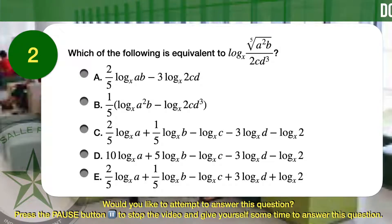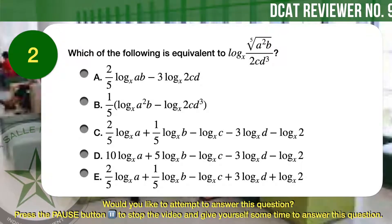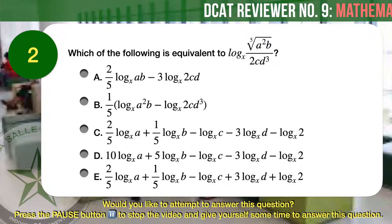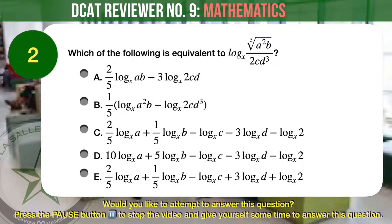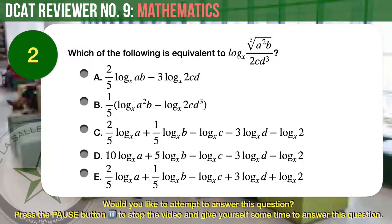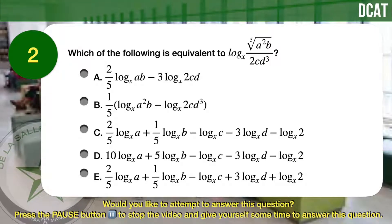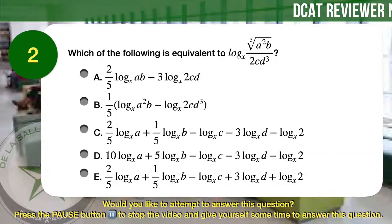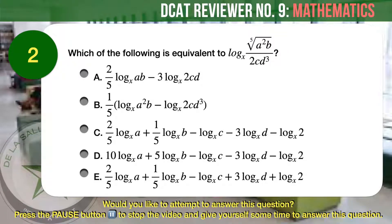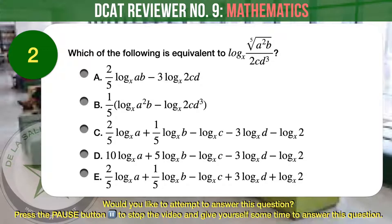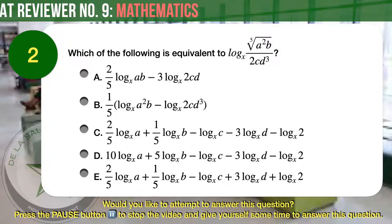Answer choice C: two-fifths times the logarithm base x of a, plus one-fifth times the logarithm base x of b, minus the logarithm base x of c, minus three times the logarithm base x of d, minus the logarithm base x of 2. Answer choice D: ten times the logarithm base x of a, plus 5 times the logarithm base x of b, minus the logarithm base x of c, minus 3 times the logarithm base x of d, minus the logarithm base x of 2. Answer choice E: two-fifths times the logarithm base x of a, plus one-fifth times the logarithm base x of b, minus the logarithm base x of c, plus 3 times the logarithm base x of d, plus the logarithm base x of 2.